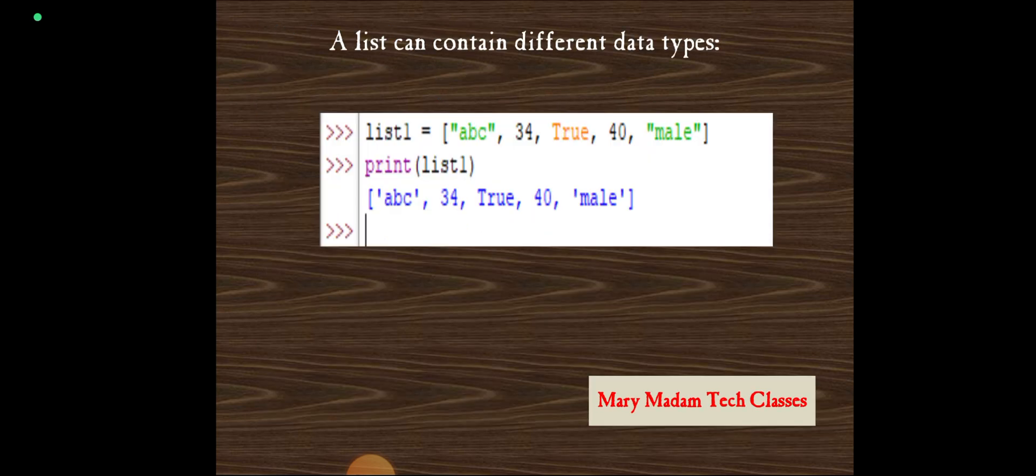A list can contain different data types. We can give all the data types together. With the different data types, we can write in a list. List 1 equals to ABC in double quotation, so it is a string data type. 34 is an integer. True is a boolean. 40 is an integer. And male is also a string data type. If I want to print list 1, the output is ABC, we written in double quote, now it is a single quote list form: 34, true, 40, male in single quotation.